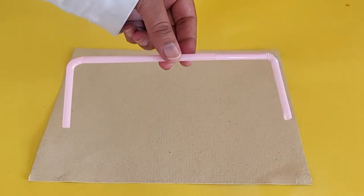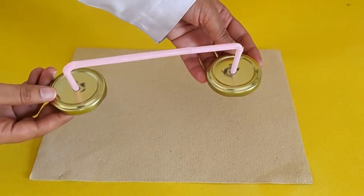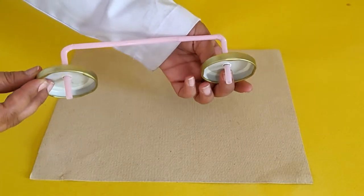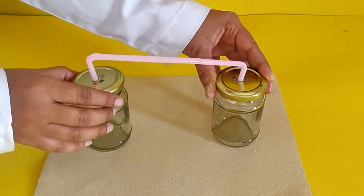Join the longer sections of the two bent straws by inserting one into the other to form a bent delivery tube. Insert the free ends of the straws into the holes in the jar lids. Place the lids on the jars.